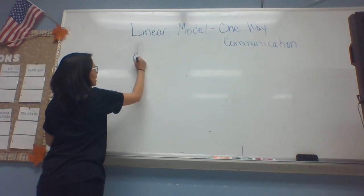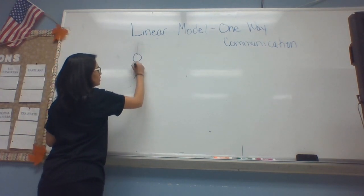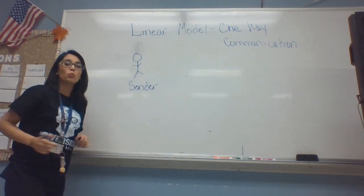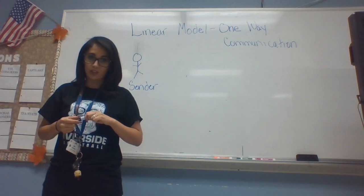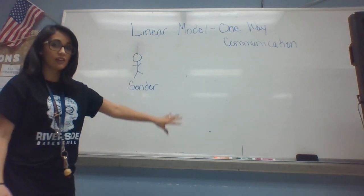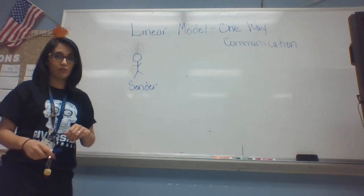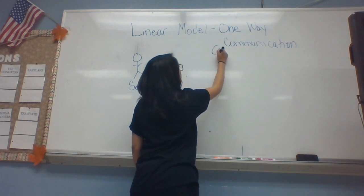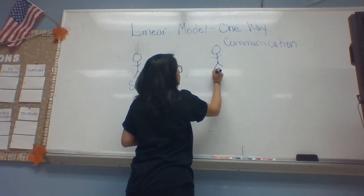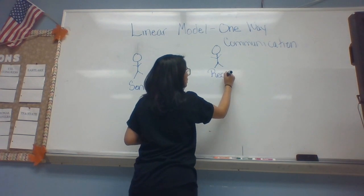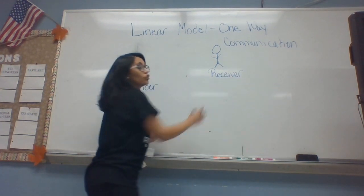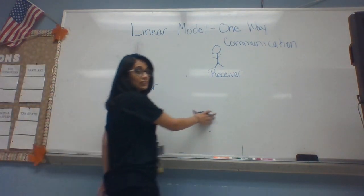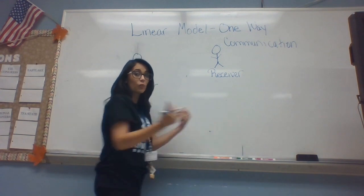Now the first person on this side is going to be someone called your sender. So you have your sender on this side, and you are going to have your receiver, which makes sense — a sender sends something, so a receiver receives it.